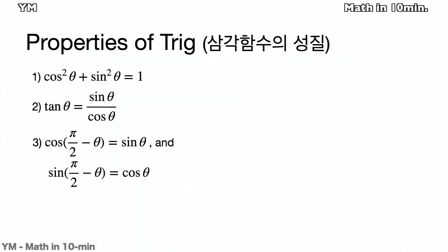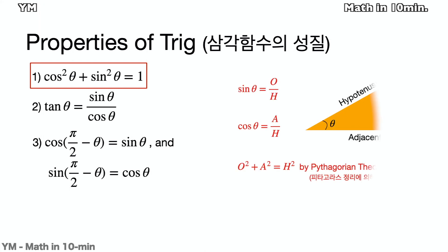The basic properties of trigonometry. First, cosine squared theta plus sine squared theta equals 1. It can be easily proved by drawing a right triangle and using Pythagorean theorem.